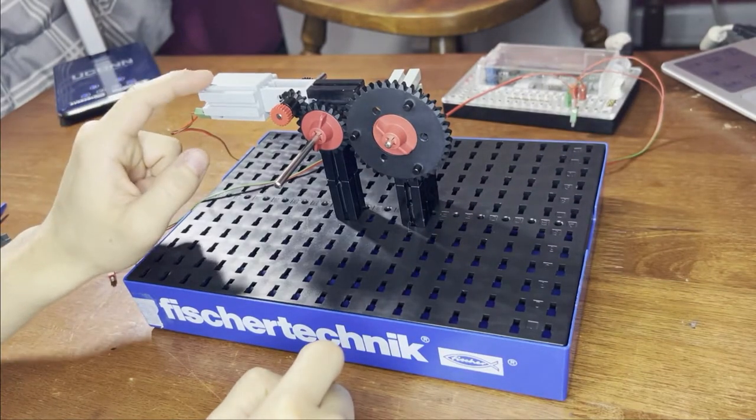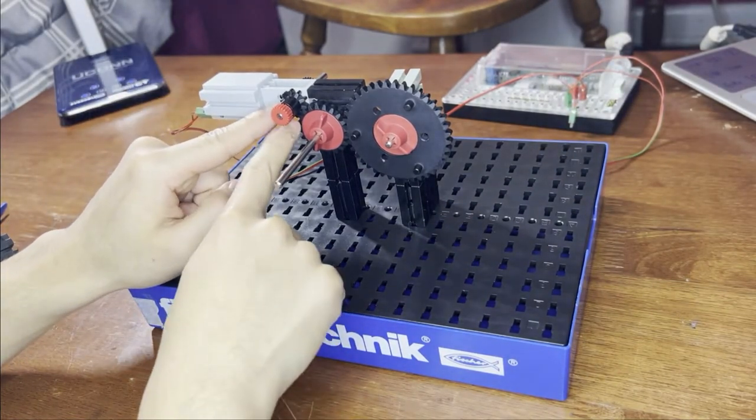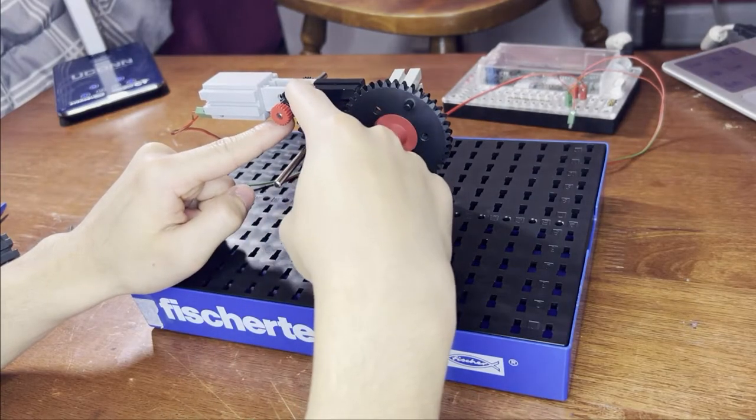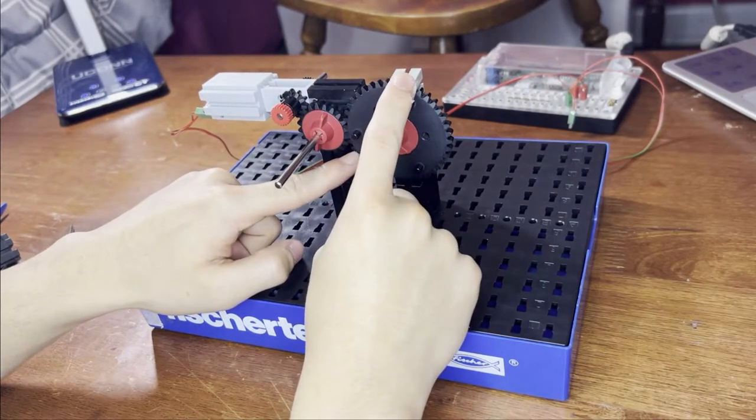So now that I have the motor hooked up to the smaller gear, you can see that this is how they mesh. The driver gear meshes with the idler gear, which meshes with the driven gear.